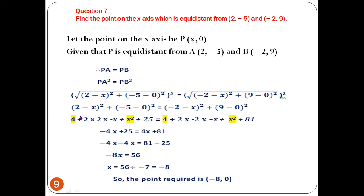Let us expand using algebraic identities. For (2 - x)², take 2 as A and -x as B, giving A² = 4, plus 2·2·(-x) = -4x, plus x². And (-5)² = 25. On the right-hand side: (-2 - x)² gives 4 plus 2·(-2)·(-x) = +4x, plus x². And (9)² = 81.